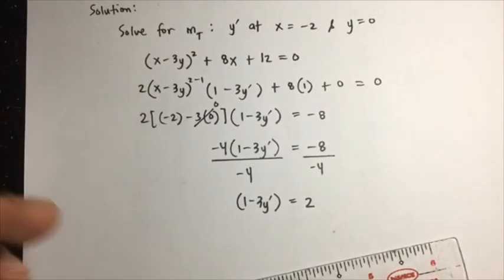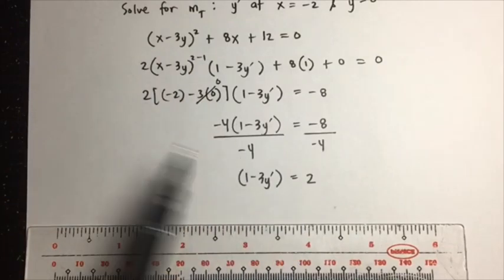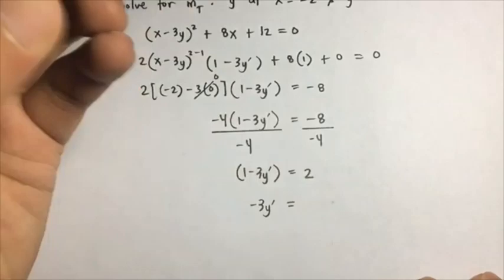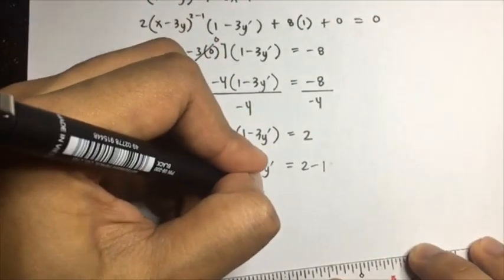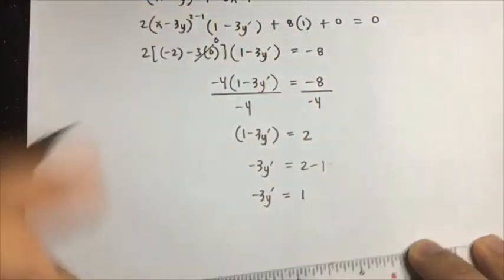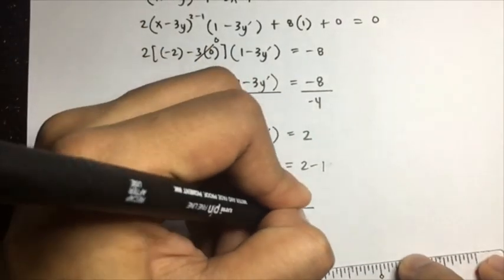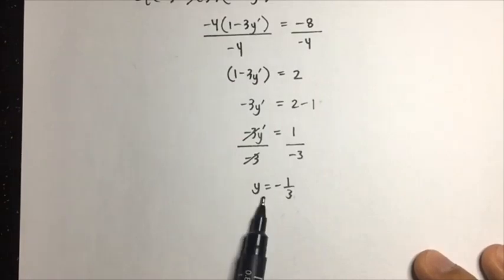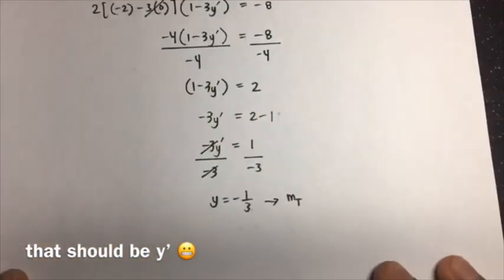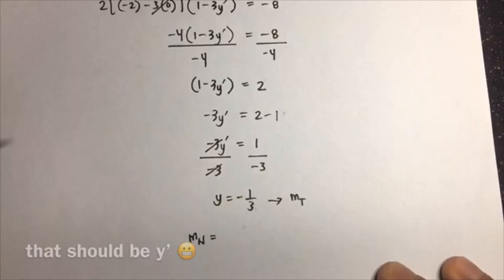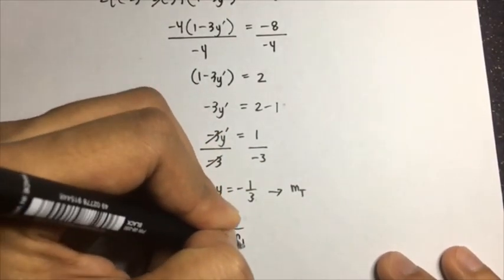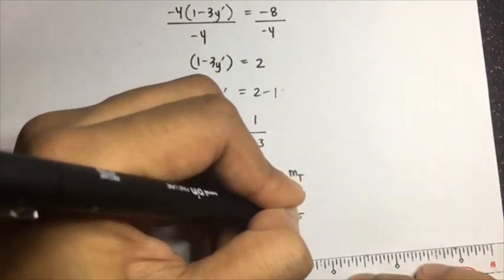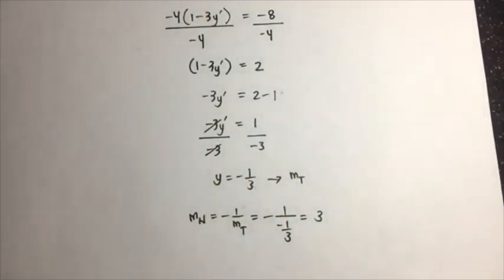I need to rewrite the solution because I committed a mistake. Going back: solving for y prime, transposing negative 1 to the other side gives negative 3y prime equals 2 minus 1, so negative 3y prime equals 1. Dividing both sides by negative 3, y prime equals negative one-third. This is the slope of the tangent line. The slope of the normal line is the negative reciprocal of the tangent slope, so it equals negative 1 over negative one-third, which equals positive 3.